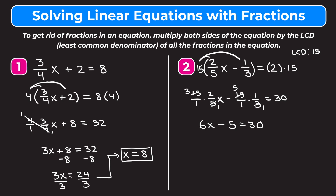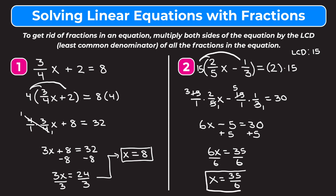So we got rid of both fractions by multiplying both sides by the least common denominator. Now we're just going to solve. We're going to add 5 to both sides. On the left we're left with 6x. On the right, 30 plus 5 is 35. We're going to divide both sides by 6. On the left we get x, and on the right we get 35 over 6. I'm just going to leave it as a simplified improper fraction, so x equals 35/6.